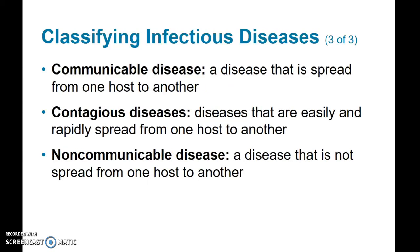There are different ways of classifying infectious diseases based on how easily they're spread. A communicable disease is one that is spread from one host to another. Contagious diseases are spread very easily and quickly from one host to another. Non-communicable diseases are not spread from one host to another — for example, cholera, which is waterborne but not spread by human-to-human contact.